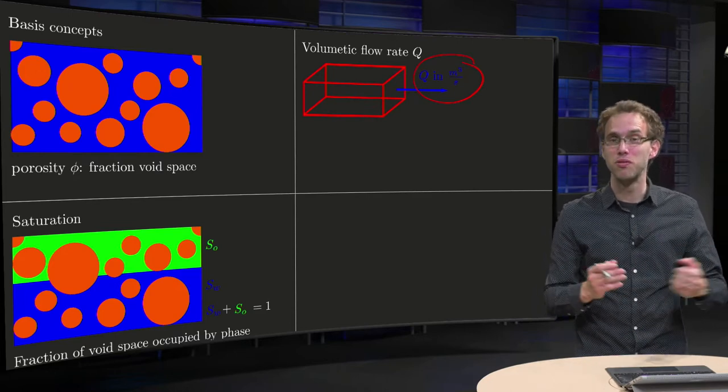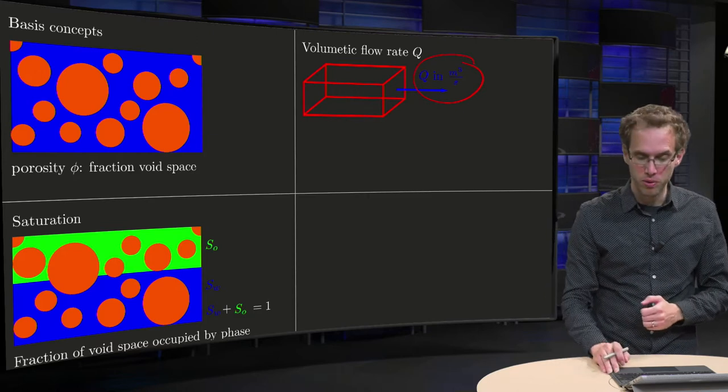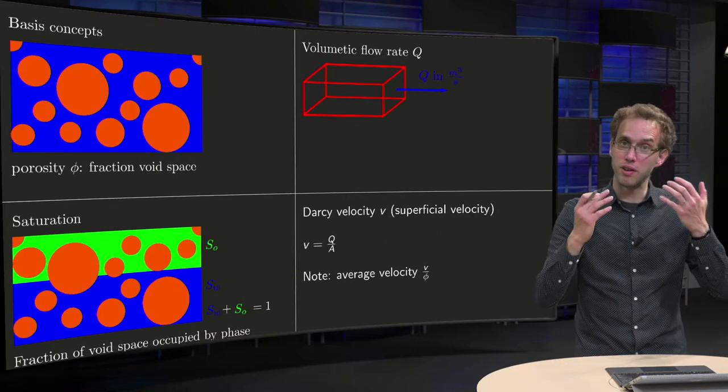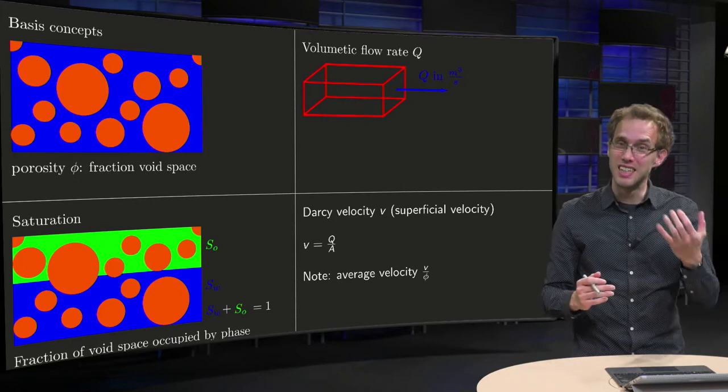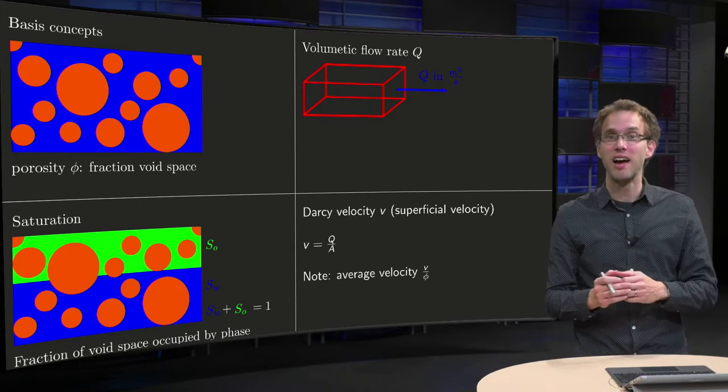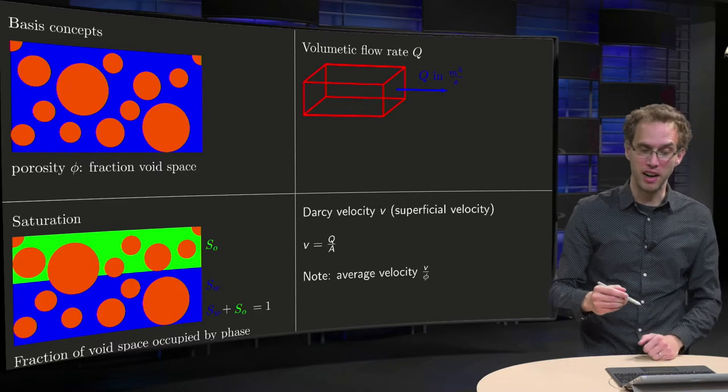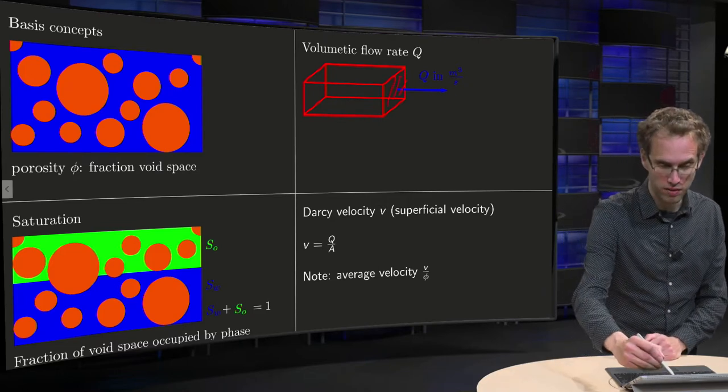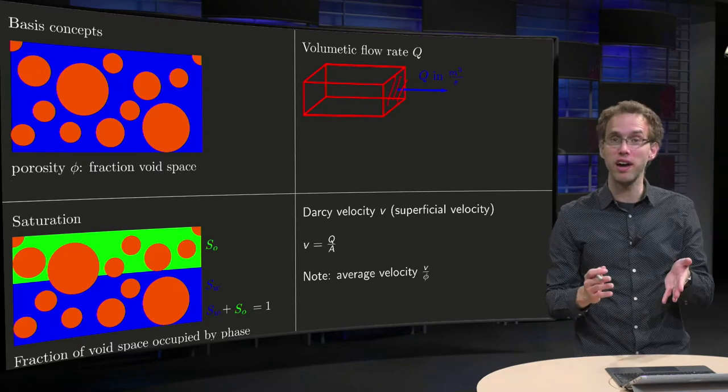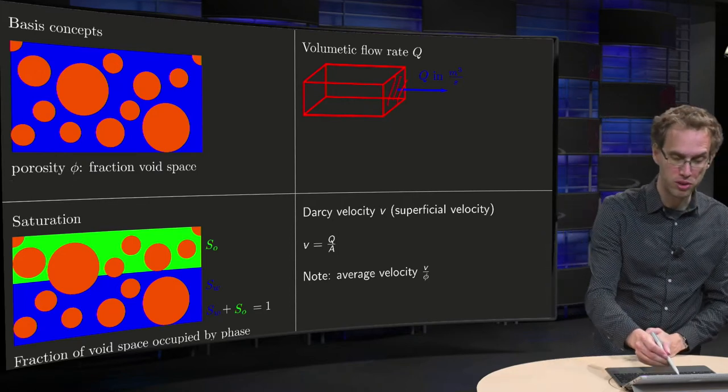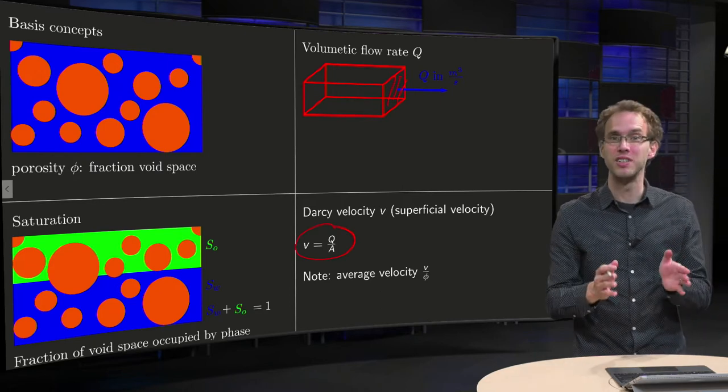But how is this related to velocities? Well, what we do is we say, we have a volumetric flow rate, meter cube per second, that's something I can measure easily, and if we divide that by an area, this area over here, the area A, you get a velocity V equals Q over A, and that's called the so-called Darcy velocity of fluids. That's a velocity you can measure relatively easily.